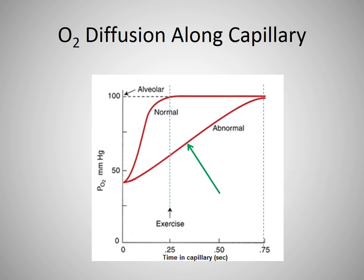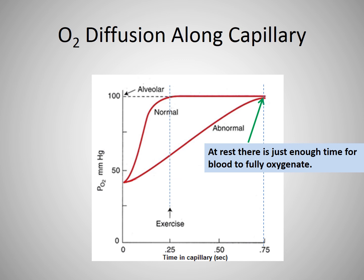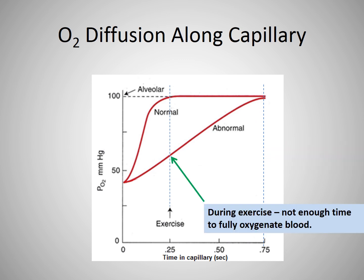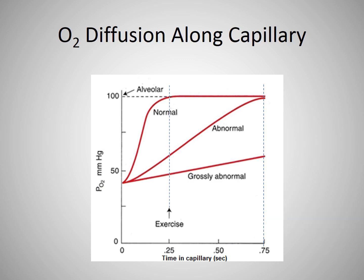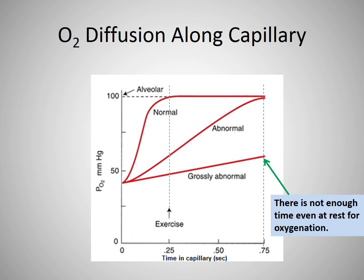When there is thickening of the alveolar capillary membrane, such as occurs in interstitial lung disease, the diffusion is slower. At rest in this example, there is just enough time for the blood traveling three quarters of a second through the capillary to become fully oxygenated. When this subject exercises and the blood is now traveling through the capillary in only a quarter of a second, there is not enough time for the blood to become fully oxygenated. And when the alveolar capillary membrane is severely thickened, there is not enough time even at rest for the blood to become fully oxygenated.